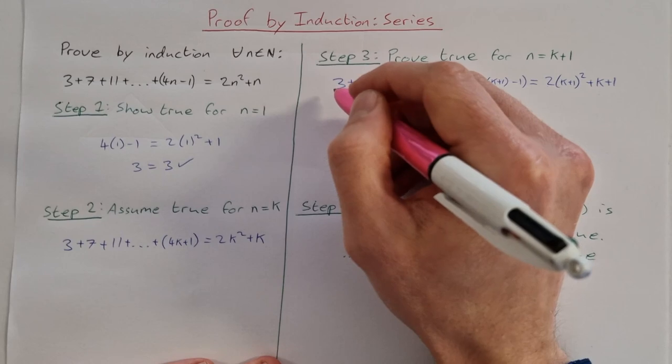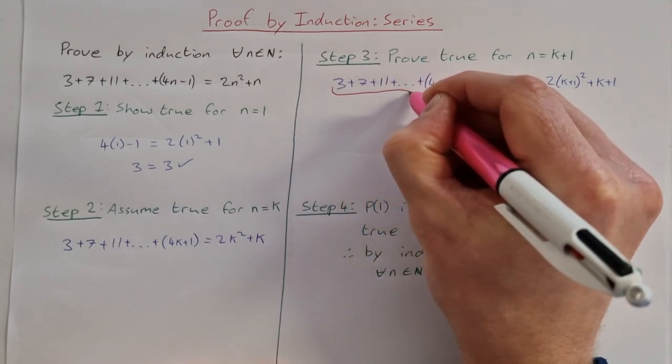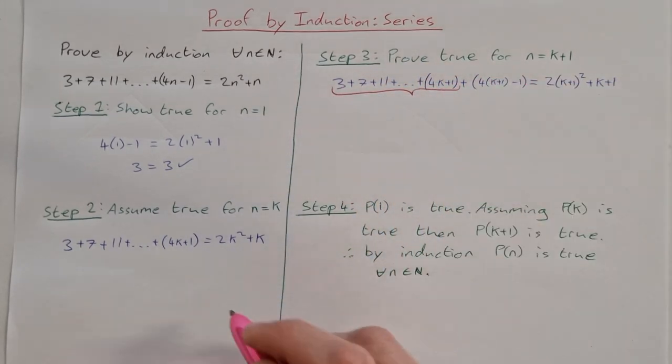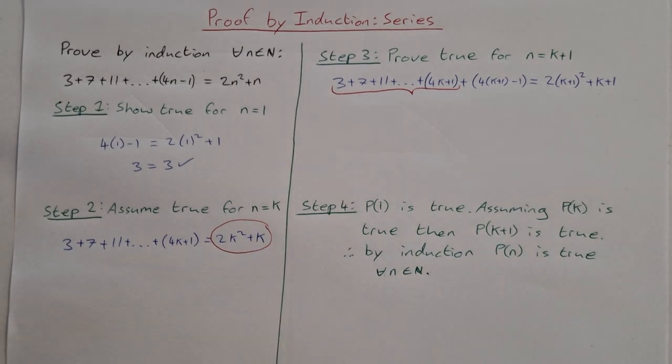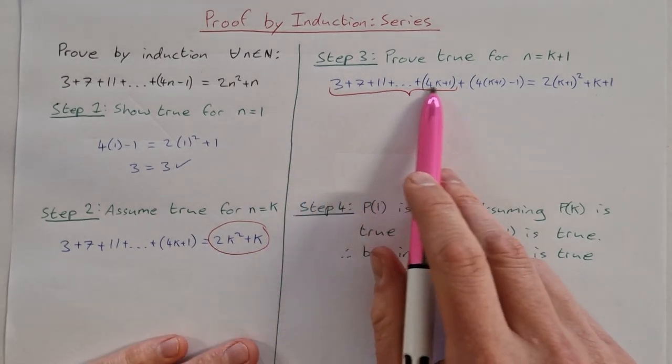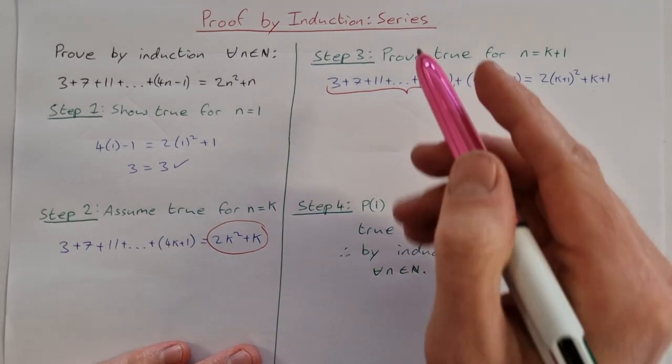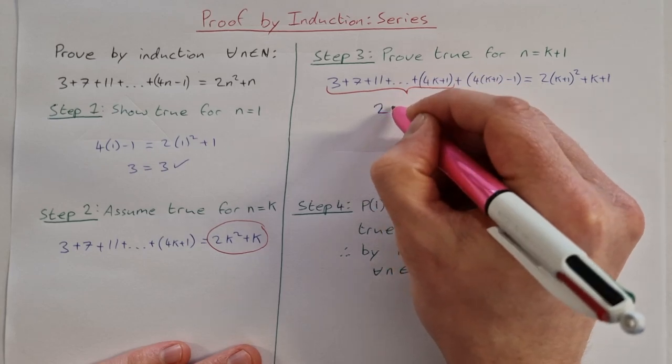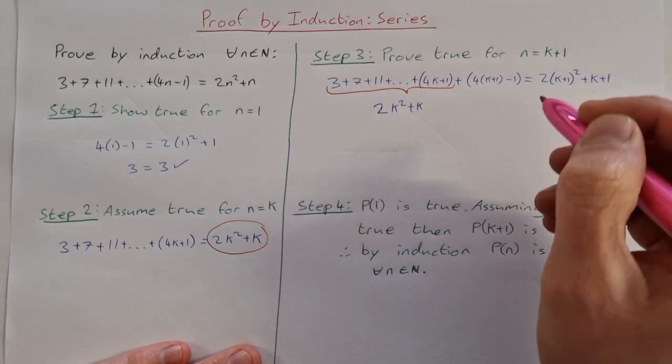The first step is always a substitution. We substitute instead of this bit we put in that, so instead of my 3 plus 7 plus 11 up to 4k minus 1, I put in 2k squared plus k.